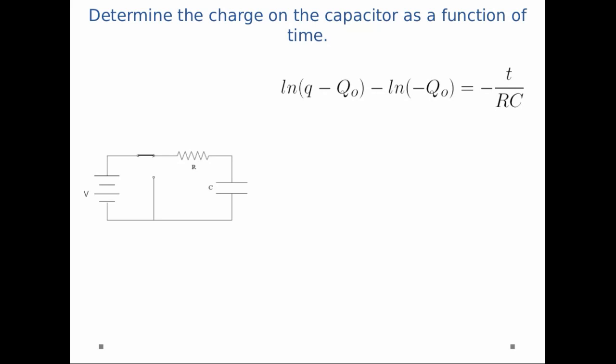And so I can do the integral. 1 divided by q minus Q0 gives an integral of natural log of q minus Q0. And when I plug in 0 and q, I get the limits as you see over here. Integral of dt is just t. When I plug in 0 to t, I get what you see on the right.